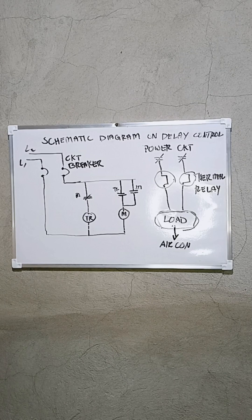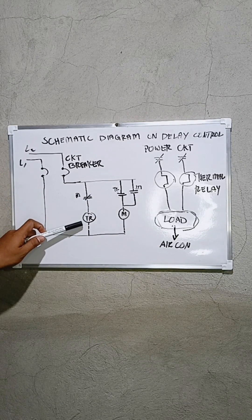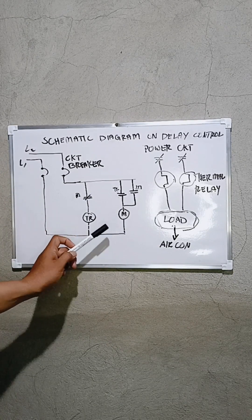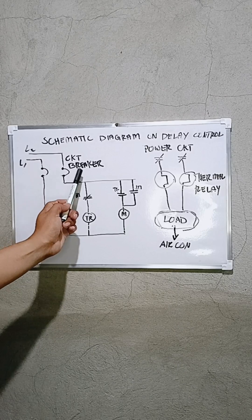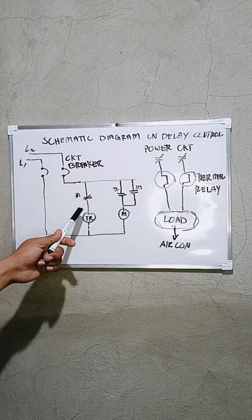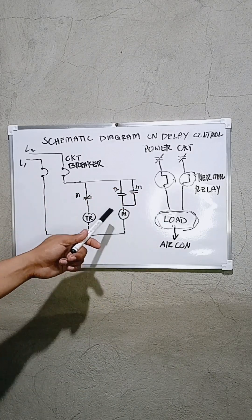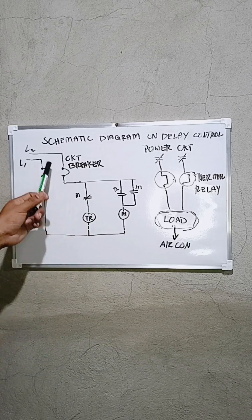So may Line 1 at Line 2. Yan po ang circuit breaker, yung circuit breaker. At ito naman po yung timer mga kapar, at ito na po yung magnetic contactor. By the way mga kapar, ito po yung schematic diagram niya at saka ito po yung power circuit niya. Yung mga gamitan: timer, magnetic contactor, at circuit breaker mga kapar. Ito lang po yung diagram niya.